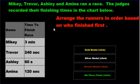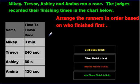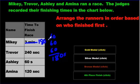We have two more questions. Mikey, Trevor, Ashley, and Amina ran a race. The judges recorded their finishing times in the chart below. Arrange the runners in order based on who finished first. We have minutes, seconds, seconds, and minutes — they're different. Make them the same. Three minutes: using 60 seconds in one minute, that's three 60s — 180 seconds. Now they're all seconds, and that's what we like.